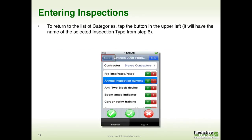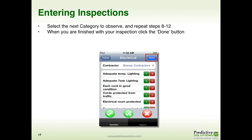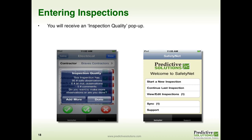Once you click Done, you'll be returned to your list of subcategories. You can either enter additional safe and at-risk items using those subcategories, or you can tap on Safety, which will take you to your main list of categories. From there, you can select another main category and collect additional safe or at-risk items. If you do not have any additional at-risk items to enter, click Done. You will be presented with an Inspection Quality Pop-Up, which provides feedback on the number of safe and at-risk items collected and the number of items needing comments. You can select Add More to go back and add items, or if satisfied, select Done to return to your home screen.